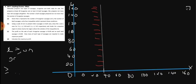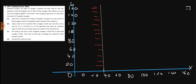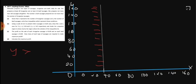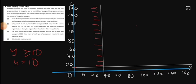Line 2 is Y greater than or equal to 10. We write it as Y equals 10 and plot a horizontal line at Y=10 on the Y axis. Greater than or equal to 10 means the region above the line is the wanted region. So we shade the unwanted region below the line.